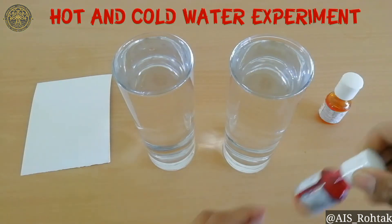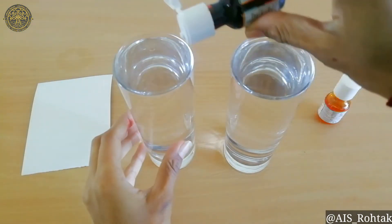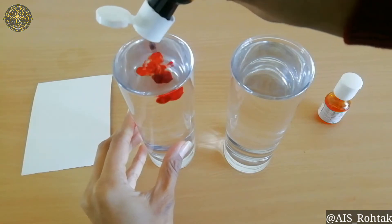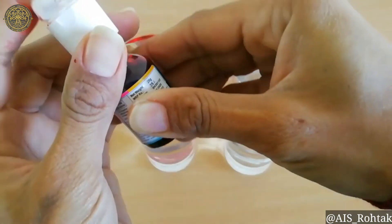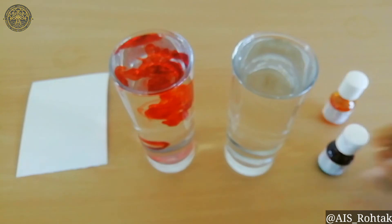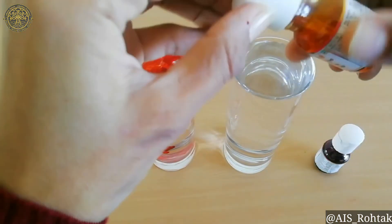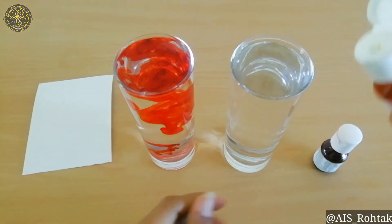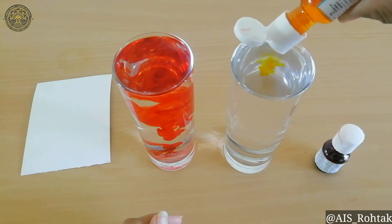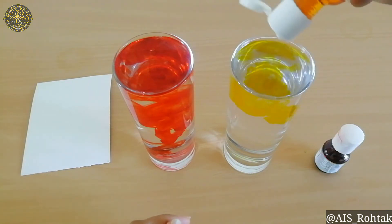So students, at this very first step, I am going to add food colors into the water. I have added red color into the cold water and now I have taken yellow color. This I have added into the hot water.